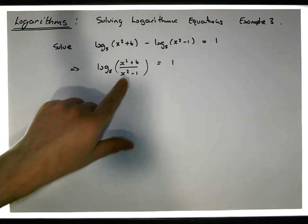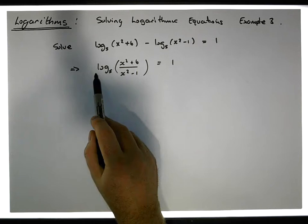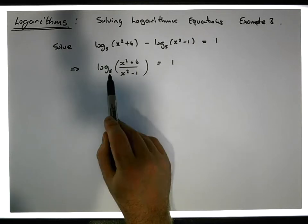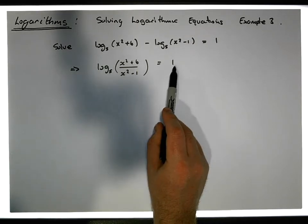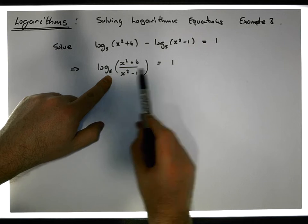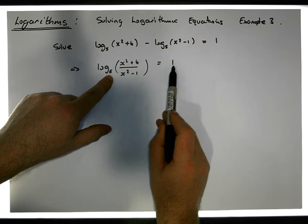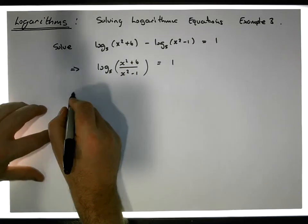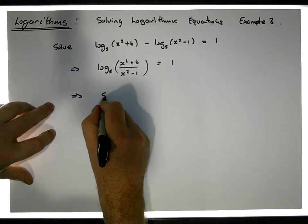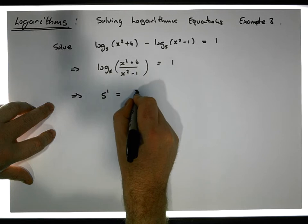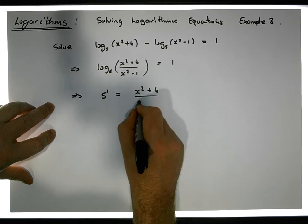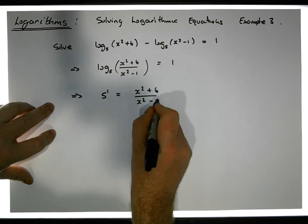By the definition of a logarithm, if we have the log of some value to a particular base equal to a specific number, the base raised to that power must equal that value. So this implies that 5 to the power of 1 must be equal to (x squared plus 6) over (x squared minus 1).